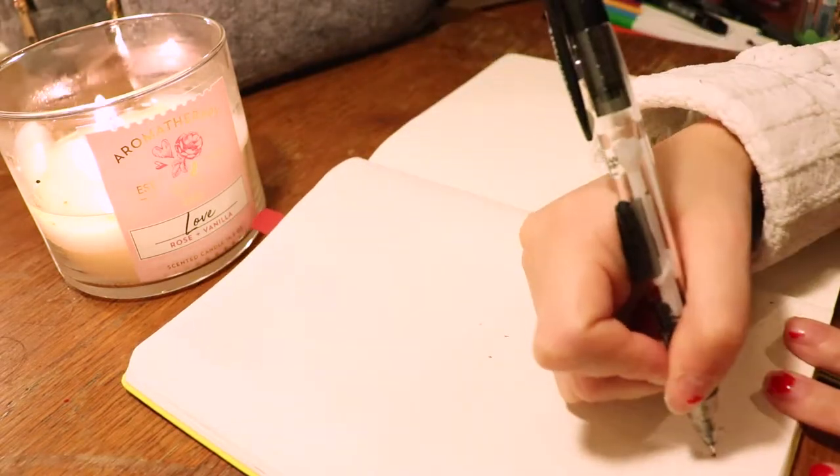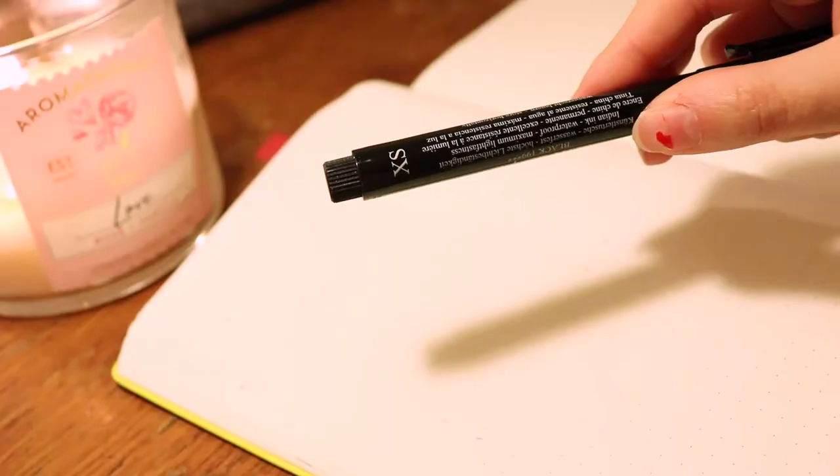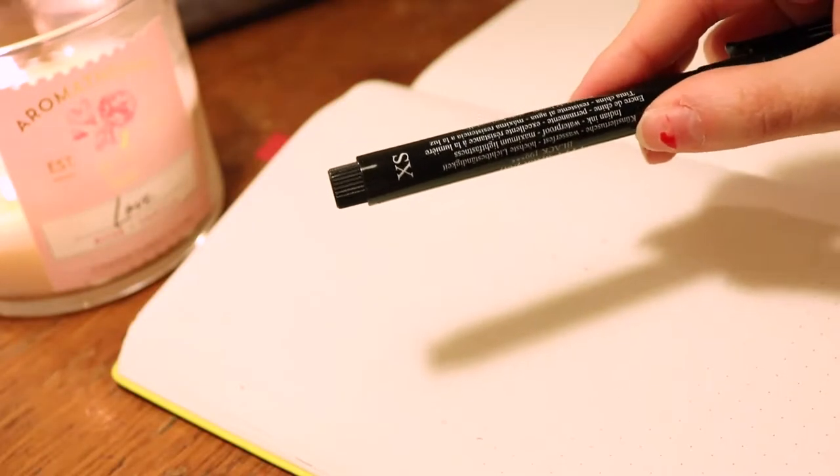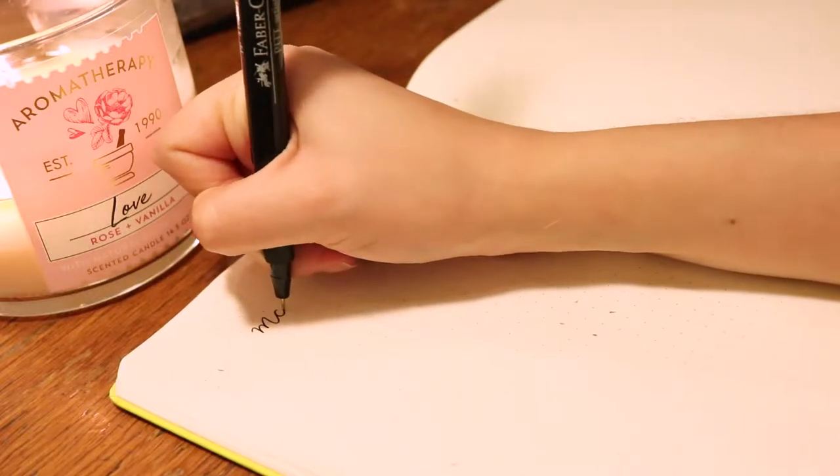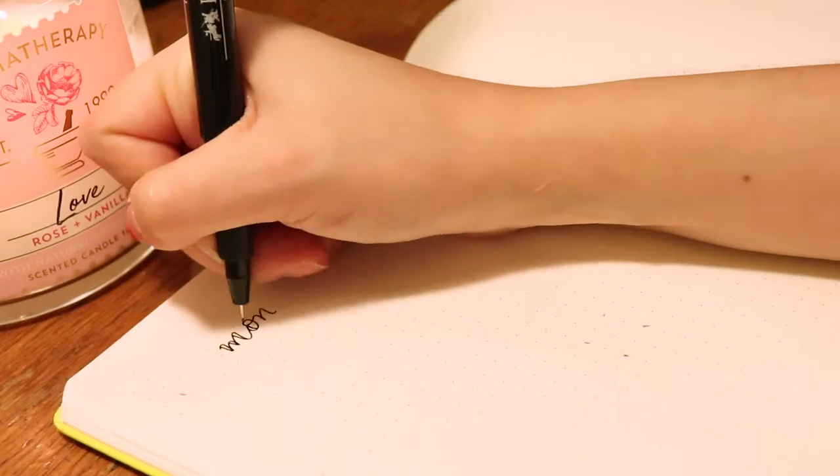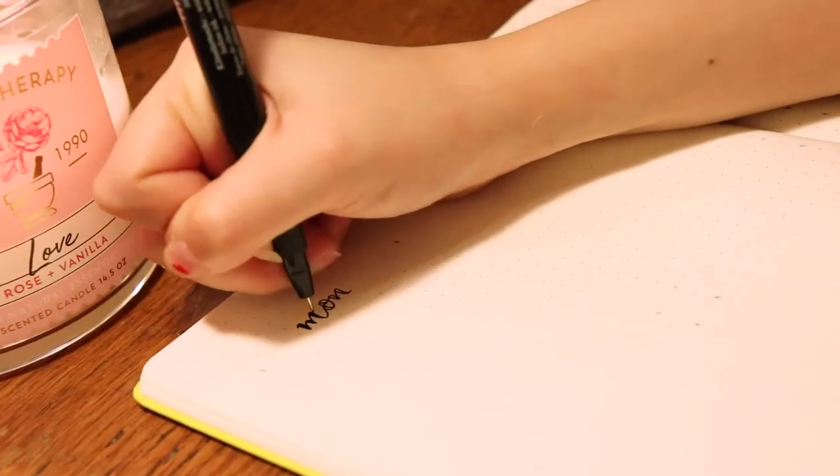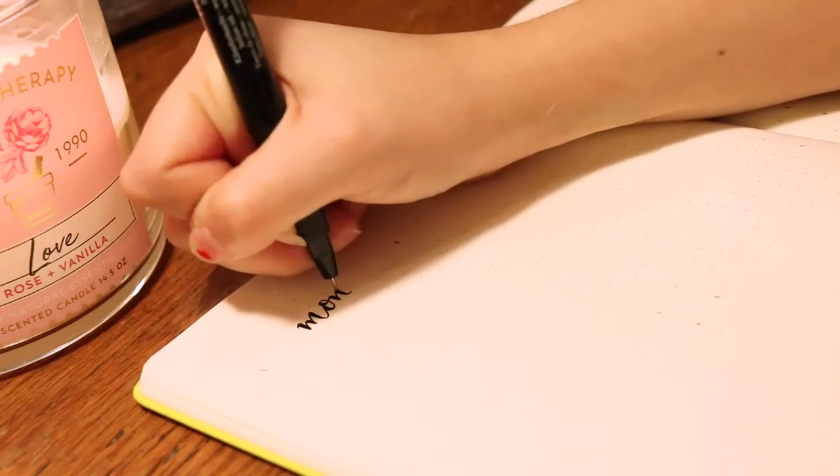Since we're setting up my weekly spread, I wanted to make it into little boxes. My boxes are 11 by 15, so 11 across, 15 down. I keep on doing this for every single day of the week, Monday through Sunday. For me, my week starts on a Monday.